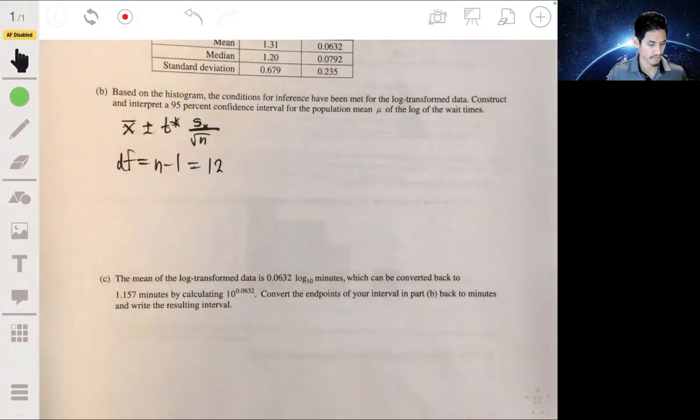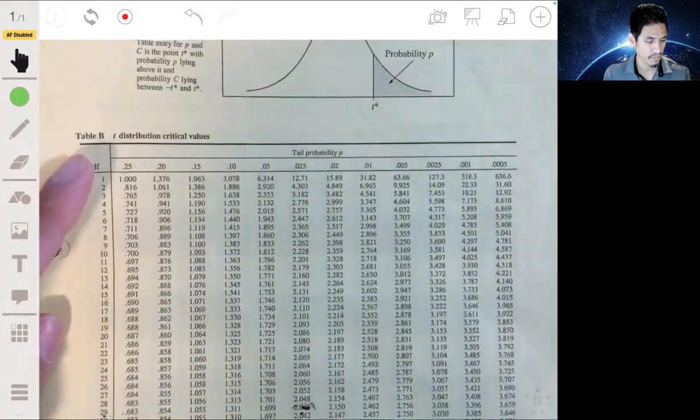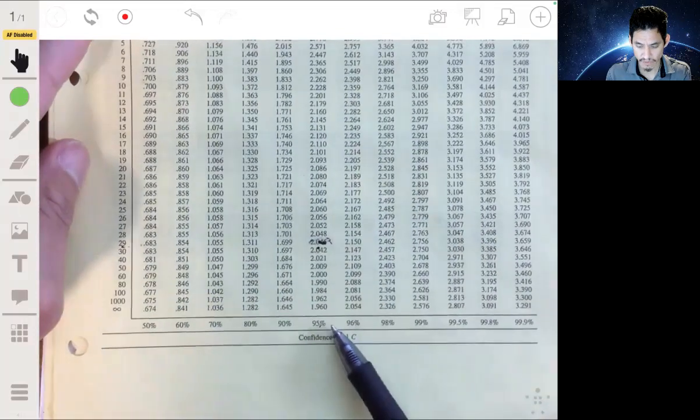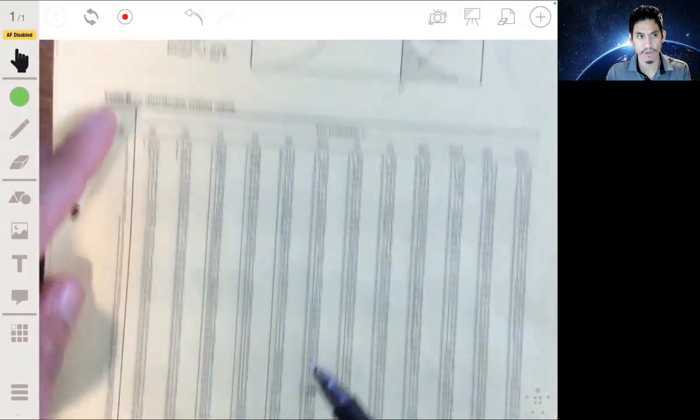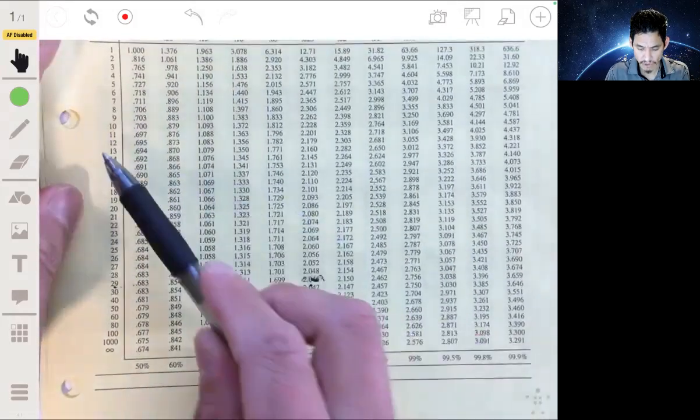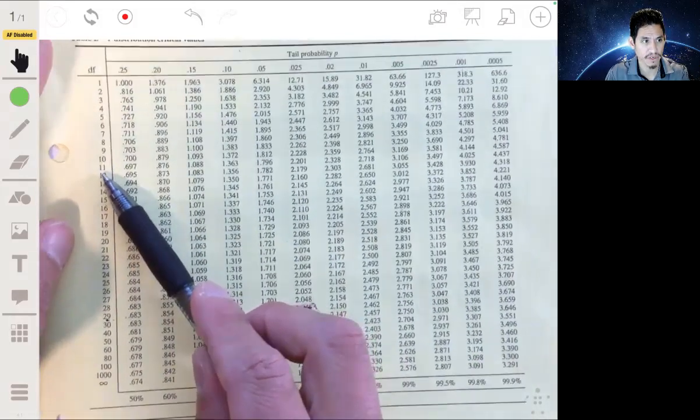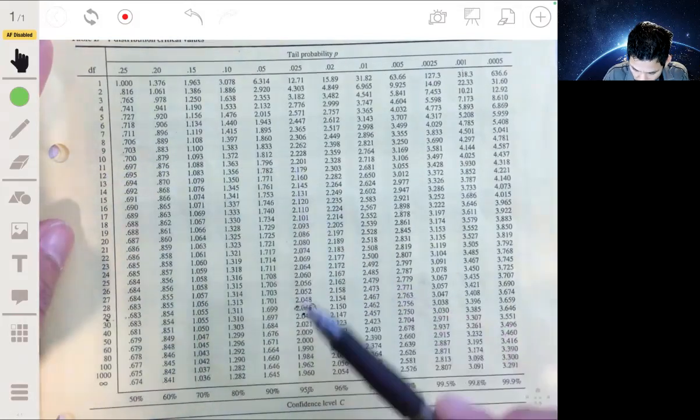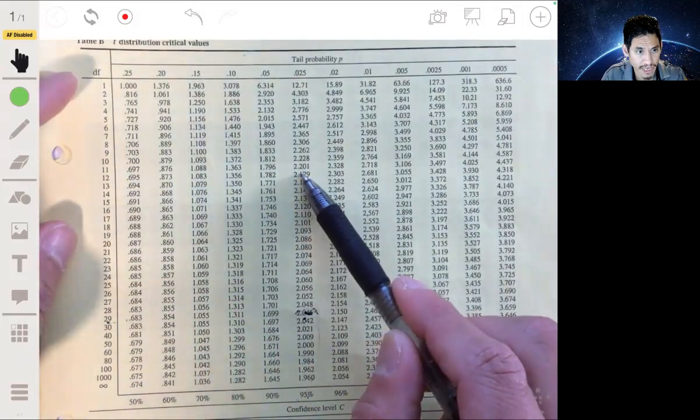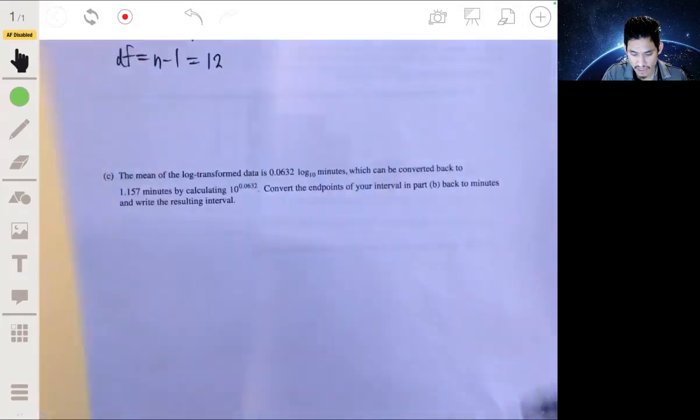So we look at our table for the appropriate 95% confidence interval. Make sure you go to table B with t distribution. We go to the row with 12 degrees of freedom, line it up, and get that 2.179 as your t star.